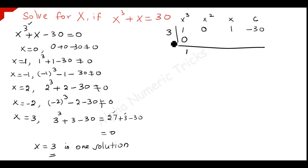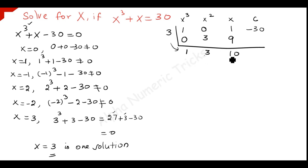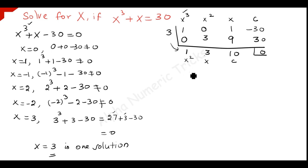So 1 plus 0 is 1, and you multiply 1 into 3 to get 3, write it here. Adding those two terms: 0 plus 3 is 3. Then multiply 3 by 3 to get 9 — wait, 3 times 10 is 30. Write minus 30 plus 30, it becomes 0. Now the power is reduced by 1, so from the result this is x squared, this is x, and this is the constant. Taking them with their signs we get x squared plus 3x plus 10 equals 0.